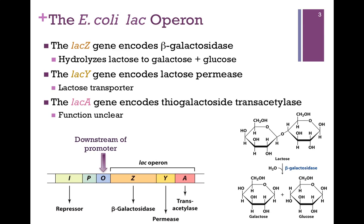The LAC-A gene encodes thiogalactoside transacetylase, and although we know its catalytic function, its role in the operon is unclear because the gene can be deleted and lactose is still processed properly. The operator region is upstream of the structural genes but downstream of the promoter, so anything that binds to this operator region will block RNA polymerase either from binding to the promoter or from proceeding through to transcribe the genes.